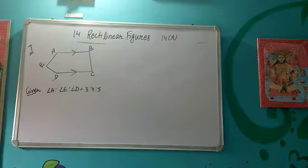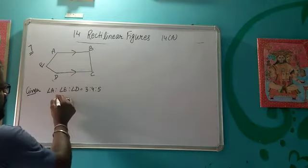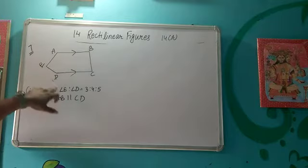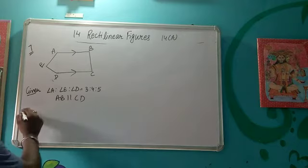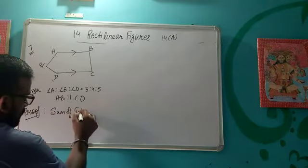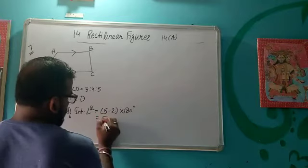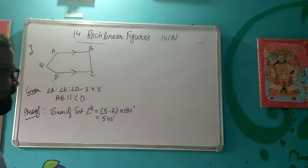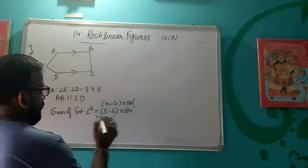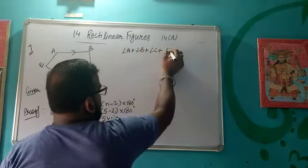In question number 7, ABCD is a pentagon. AB is parallel to CD and the ratio of three angles is given as 3:4:5. Since it is a pentagon with five sides, we first calculate the sum of interior angles: (5−2)×180 = 540 degrees. So the sum of all interior angles is 540 degrees.